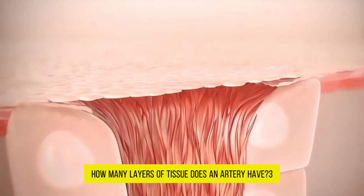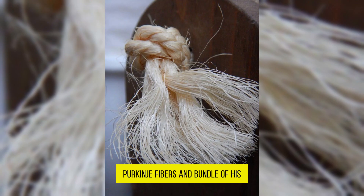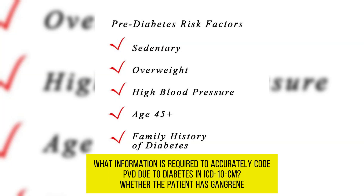How many layers of tissue does an artery have? Three. The conduction system contains pacemaker cells, nodes, the Purkinje fibers, and the bundle of His. What part of the cardiovascular system is responsible for the one-way flow of blood through the chambers of the heart? Heart valves. What information is required to accurately code PVD due to diabetes in ICD-10-CM? Whether the patient has gangrene.